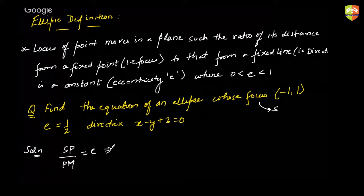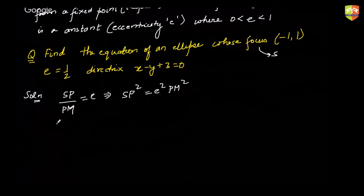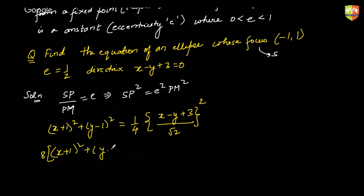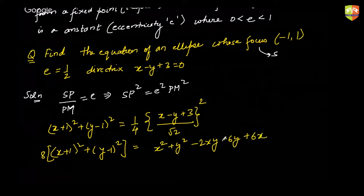So SP² = (x + 1)² + (y − 1)² = (1/4) · PM², where PM is the distance of the point from the line x − y + 3 = 0. Simplifying, we get 8[(x + 1)² + (y − 1)²] = (x − y + 3)², which expands on the right side to x² + y² − 2xy − 6y + 6x + 9.